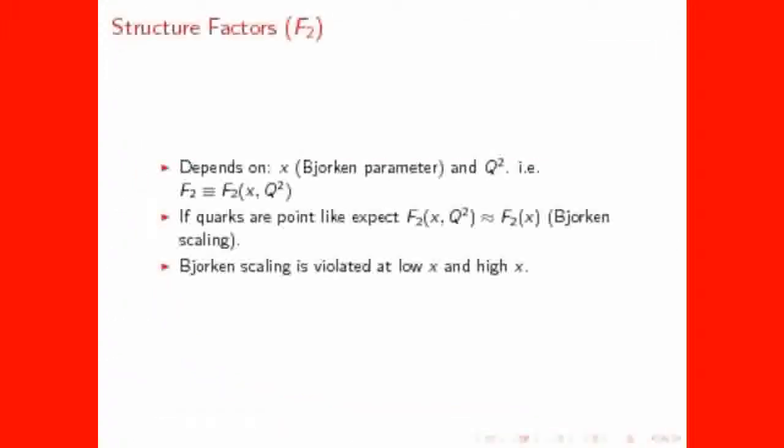We will focus here on the structure factor F2. This depends on something called the Bjorken parameter, which is the fraction of the proton's momentum carried by the parton under consideration. It also a priori depends on the value of the momentum transfer, as in the case of a proton. Now if the partons are point-like then we would expect F2 to be independent of Q squared, something known as Bjorken scaling.